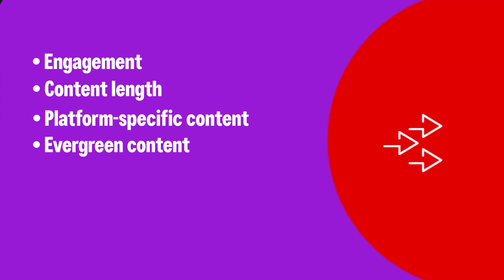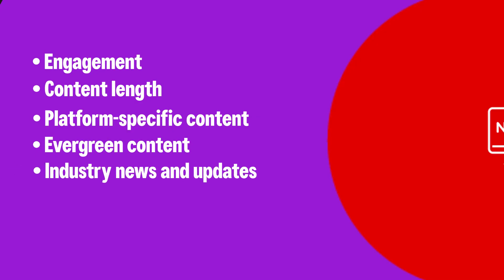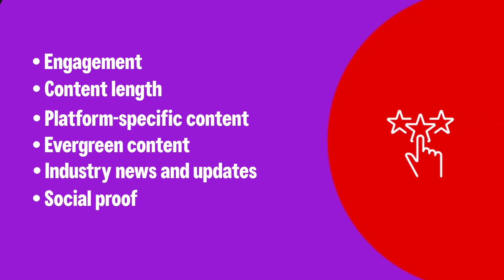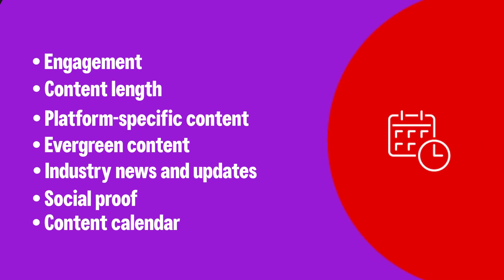Try including evergreen content that remains relevant over time, as this can drive consistent traffic to your website. Share relevant industry news and updates to position your brand as well-informed. Showcase positive reviews, testimonials, and case studies as social proof. Also look to create a content calendar to plan posts in advance, ensuring a consistent schedule and helping you align content with events, holidays, and product launches. A template content calendar is included in the workbook for this module — check it out and begin planning your next few months of activity at a high level.